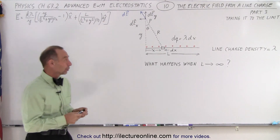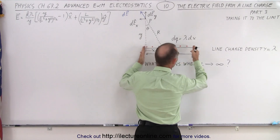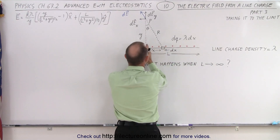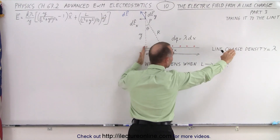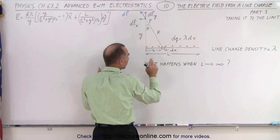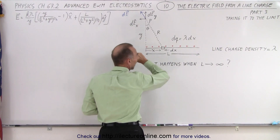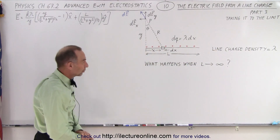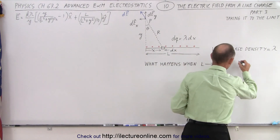In this case, what we're going to do is ask ourselves the question: what happens if the line charge becomes infinitely large, but it's only half — from zero to infinity in one direction. We don't have a line charge on the other side, so there's no symmetry here. We want to know the electric field at this point as the length of that line charge becomes infinite in one direction.